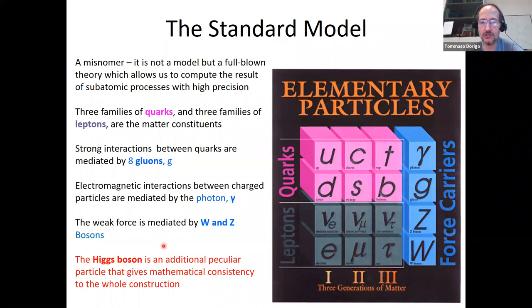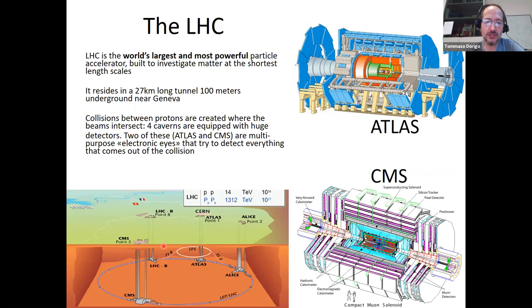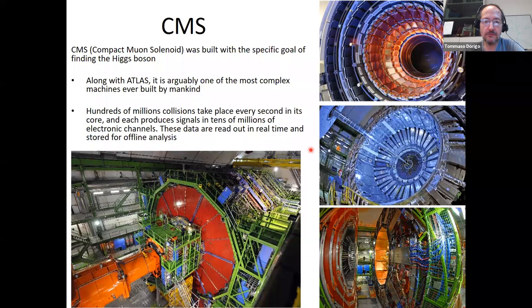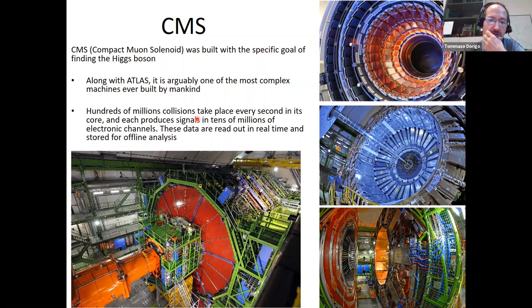We have a large machine — a 27-kilometer-long tunnel built 100 meters underground near Geneva in Switzerland — instrumented along the ring by four large experiments. These take snapshots of proton collisions 40 million times per second. The CMS experiment, to which I belong, is a 3000-strong collaboration that built and operates it — arguably one of the most complex machines ever built by humankind. Hundreds of millions of collisions take place every second, each producing signals in tens of millions of electronic channels.